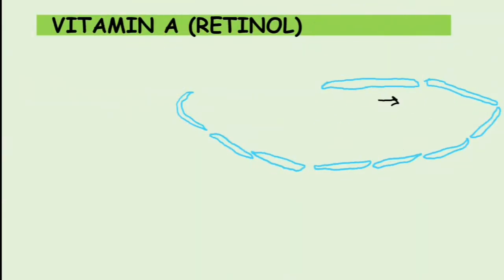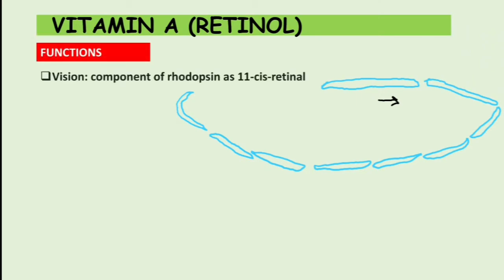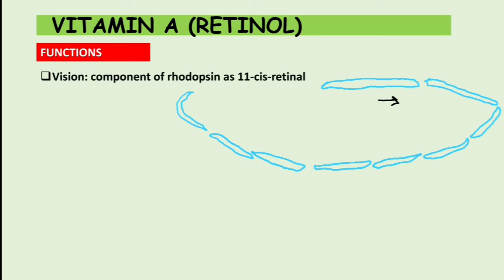The first function of Vitamin A is vision. Retinal, as an active form, is a component of rhodopsin — specifically as 11-cis retinal. This is relevant when you study photoreception and phototransduction pathways, which we'll discuss later.